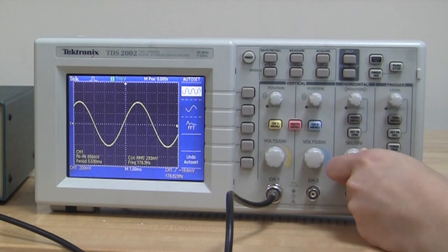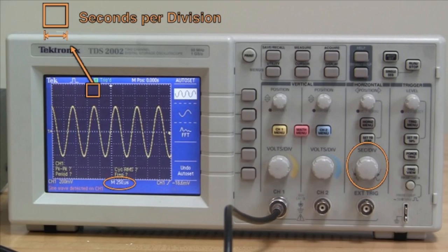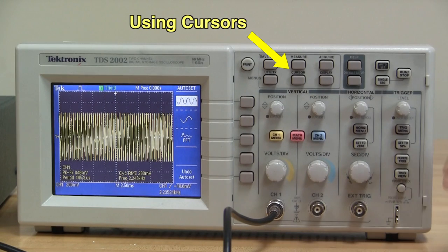We can also change the X scale of the graph by adjusting the seconds per division. The current setting of 250 microseconds per division means that each box on the graph is 250 microseconds wide.